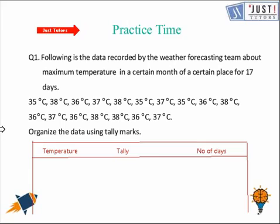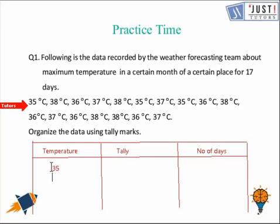We can make a table and organize the data accordingly. First, we divide the table into three columns: temperature, tally, and number of days. We write the temperature values given to us: 35 degrees Celsius, 36 degrees Celsius, 37 degrees Celsius, and 38 degrees Celsius. Then we count them.